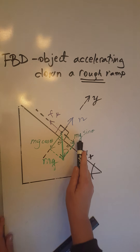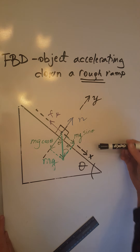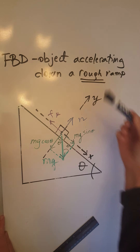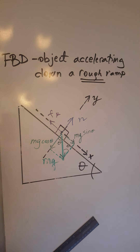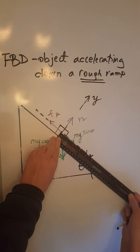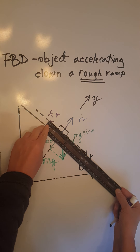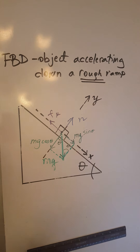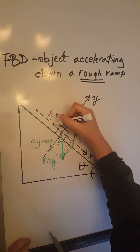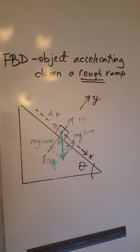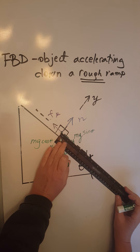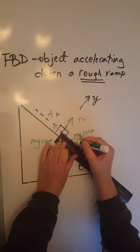Along the x-axis, mg sine theta and fk must be unbalanced in favor of mg sine theta, because we need a net force down the ramp. Therefore mg sine theta must be greater than fk. When we measure, mg sine theta is two centimeters in length.